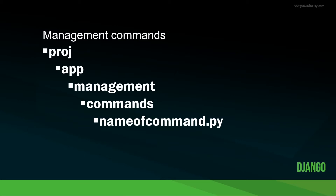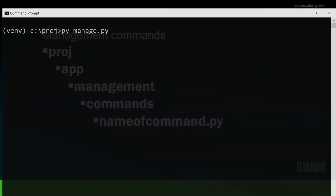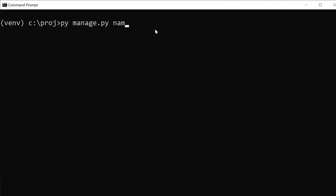First we need to understand where we place the management commands. Imagine you created a new project called proj and then a new application called app. Management commands are placed inside the application, inside a folder called management and then in a folder called commands. The name of the Python file is also the name of the command, so you would invoke it with manage.py name_of_command.